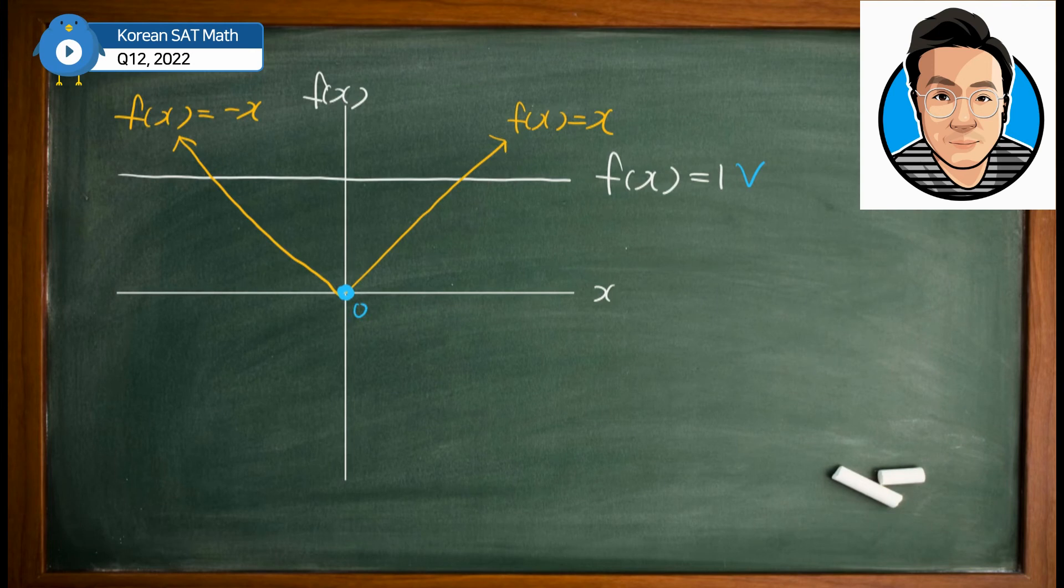At the same time, since we have f(x) = x and negative x, this point is equal to 1 and also this point is equal to negative 1. But knowing that f(x) has to have 1 as the maximum value and 0 as the minimum value, we're talking about really this area right here.